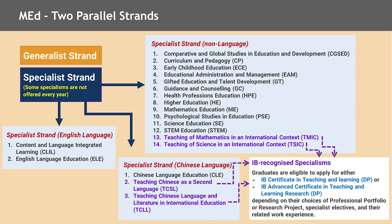The program has two parallel strands. The generalist strand is where students who do not have a clear idea or interest in a particular specialism usually apply. It is mainly for those who are not necessarily working in the field of education but have an interest in it. So for those interested in education without a clear idea of what they want to learn, this is a good strand to apply for.